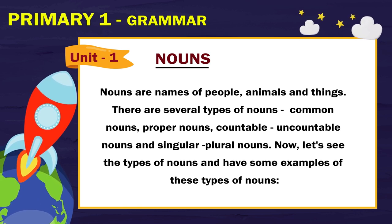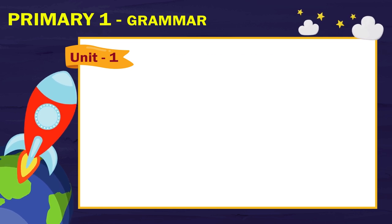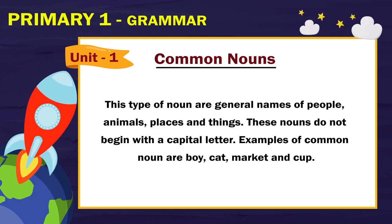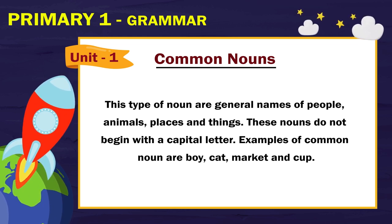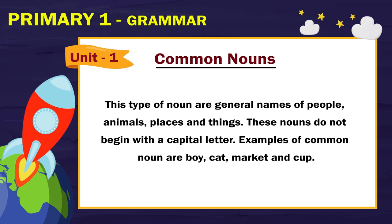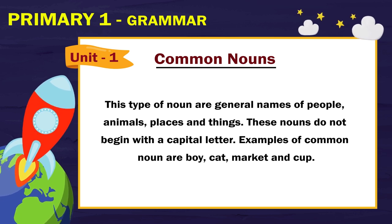Now, let's see the types of nouns and have some examples. Common nouns: this type of noun are general names of people, animals, places and things. These nouns do not begin with a capital letter. Examples of common nouns are boy, cat, market and cup.